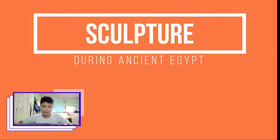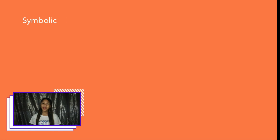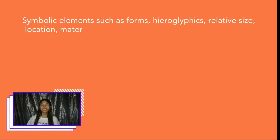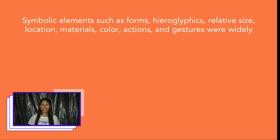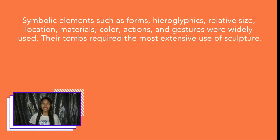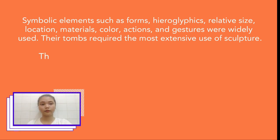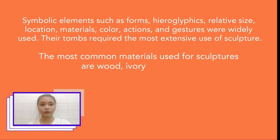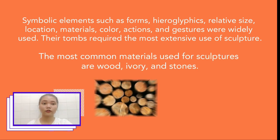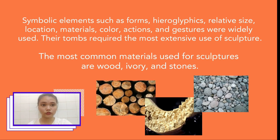Now let us take a look at the sculptures from the Ancient Egypt era. Symbolic elements such as form, hieroglyphics, relative size, location, material, color, actions, and gestures were widely used. Their tombs required the most extensive use of sculpture. The most common materials used for sculptures are wood, ivory, and stones.